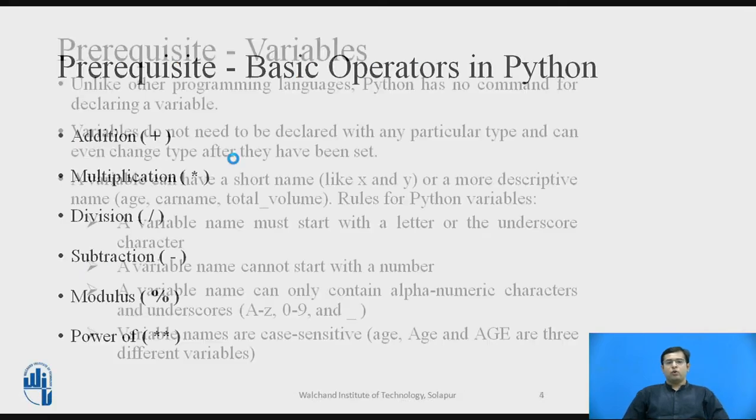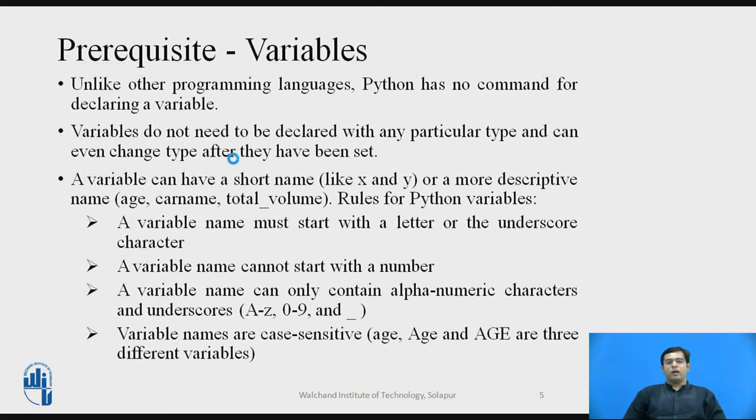Moving on to variables, now unlike many variables you might have seen in C, C++ and Java, Python has no specific command of declaring a variable. In Python, you need not specify the variable data type while defining a variable. So variable can be any short name, like x and y, or more descriptive like age, car name, total volume, etc.